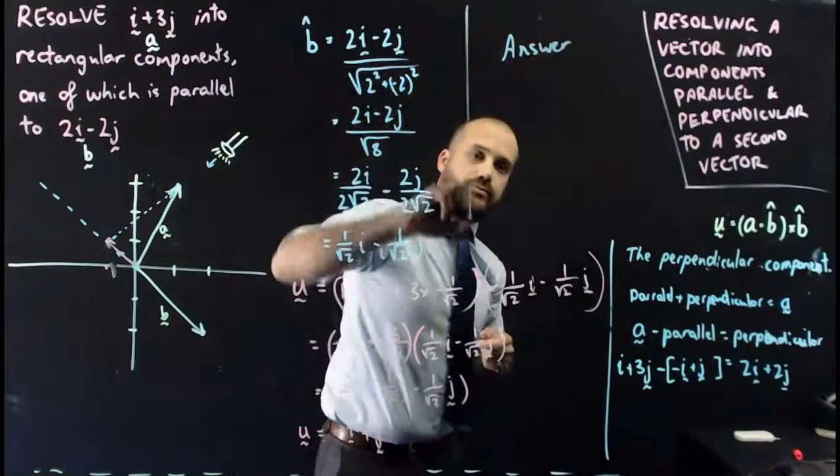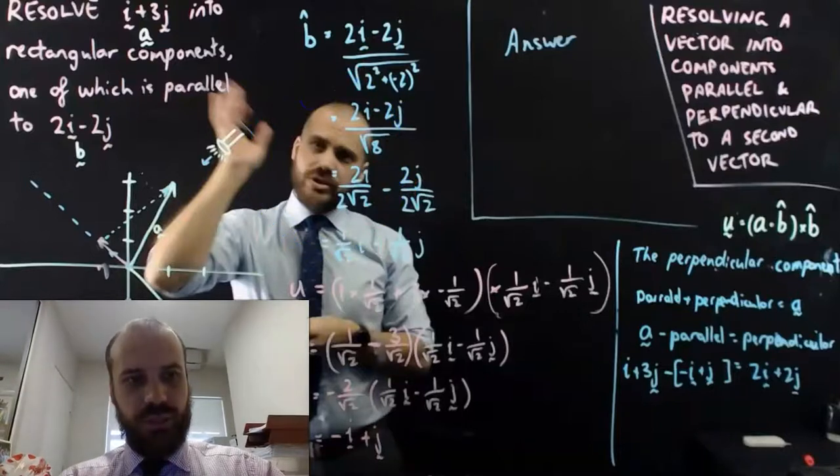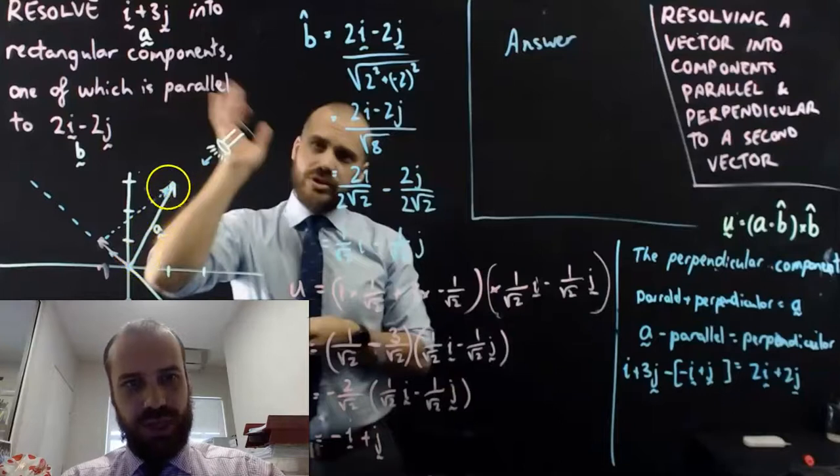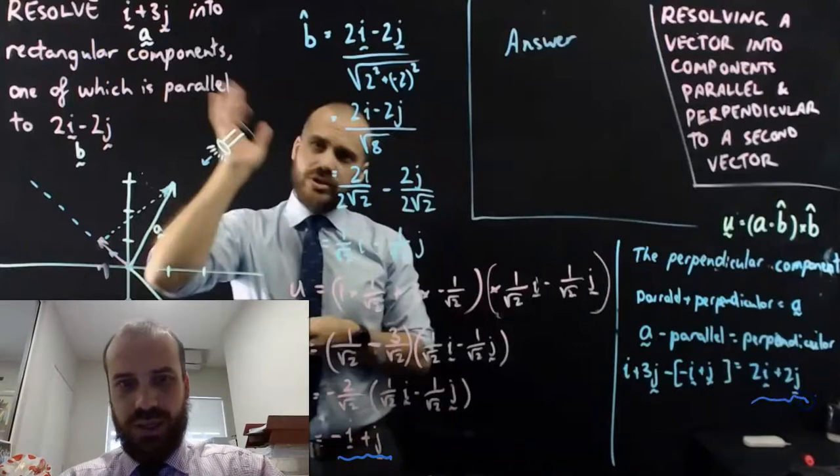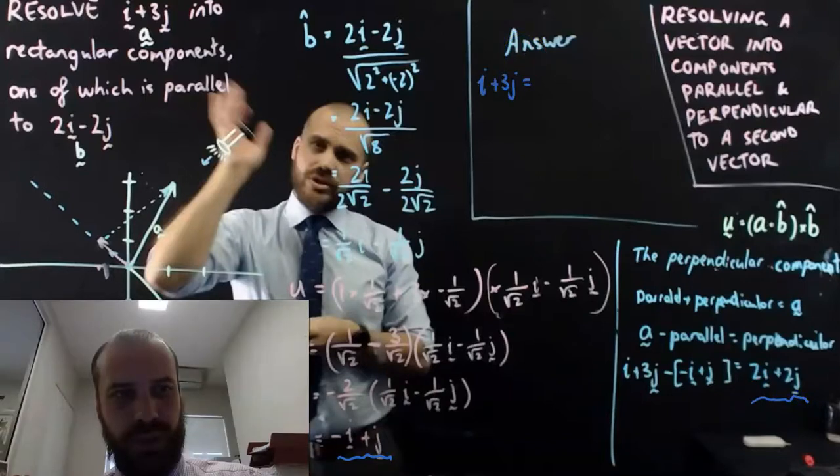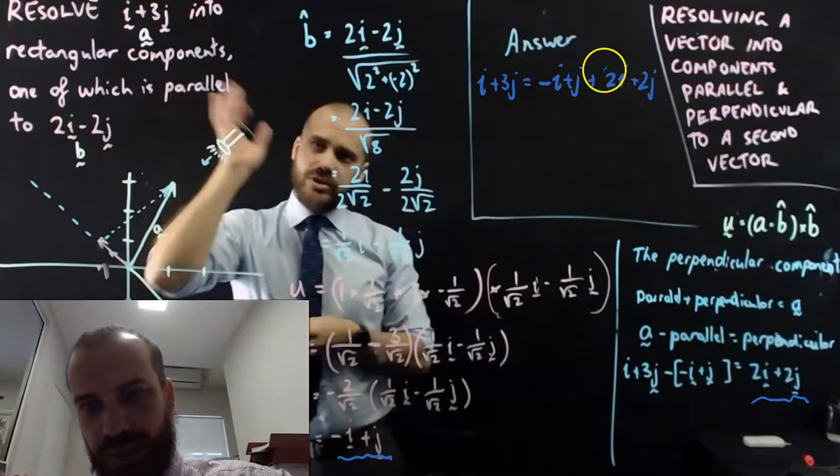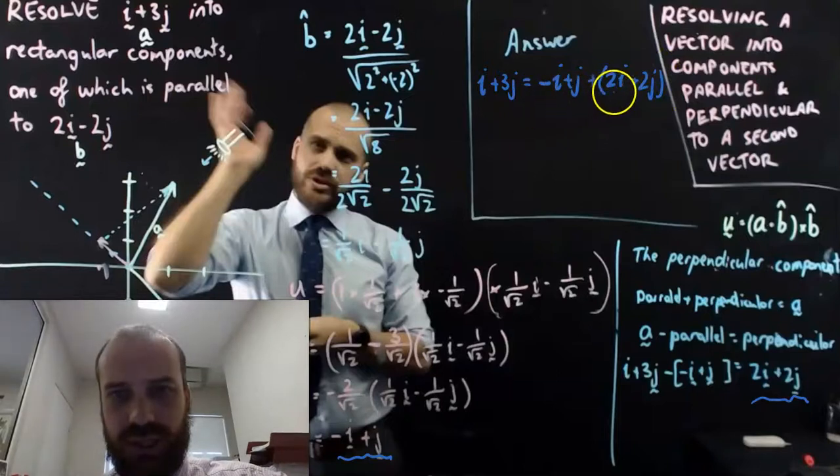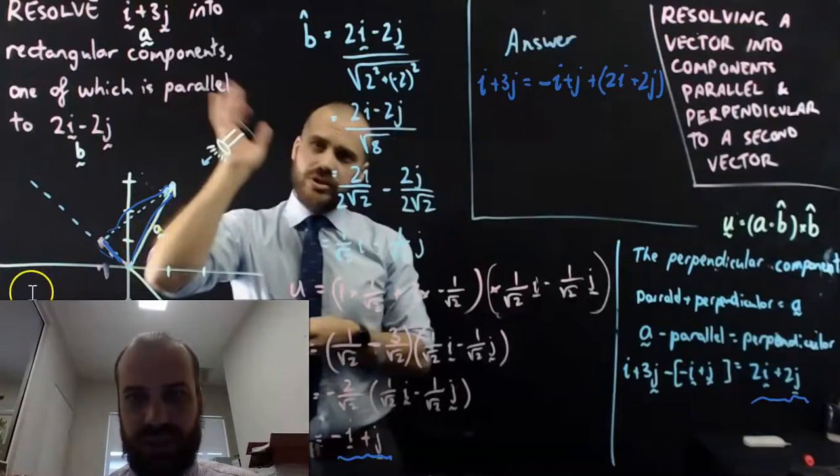What's the final answer to that question? I'm going to jump in here real quick because this guy here is going to make a bit of a mistake. So let me show you what's really going on here. We've got this vector that we started with, i plus 3j. We're resolving it into its rectangular components. Now one of them is this one here, and the other one is this one here. So our final answer is i plus 3j equals negative i plus j plus 2i plus 2j. I'm going to put brackets around here just to show that this is one vector and this is another one. Now remember this vector is this vector right there, and this vector is this vector right there, and combined they make this vector right there. That is resolving a vector into components that are parallel and perpendicular to a second vector.